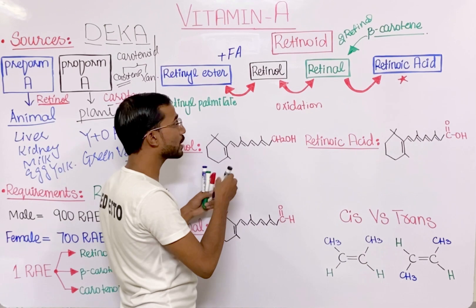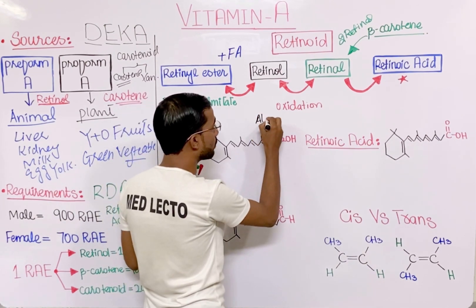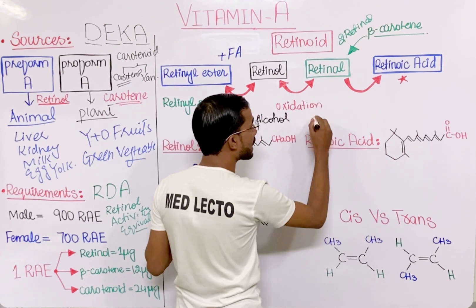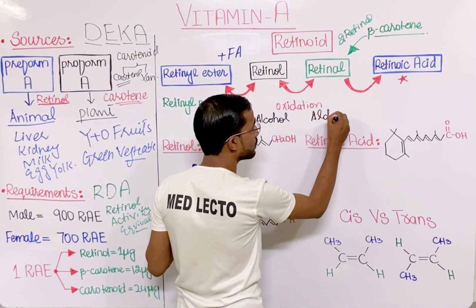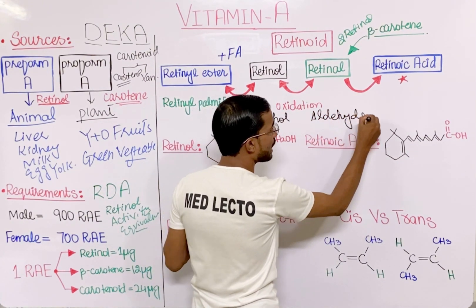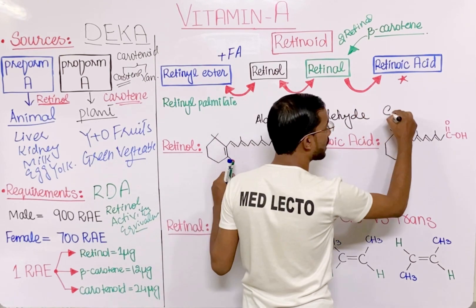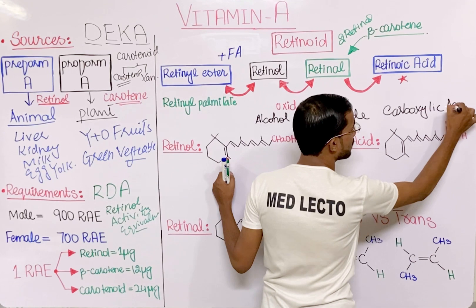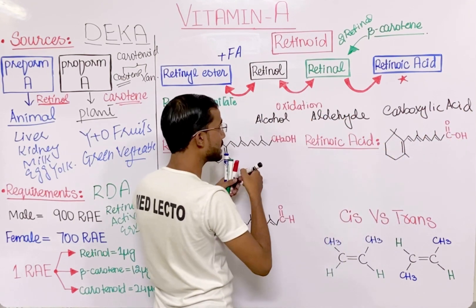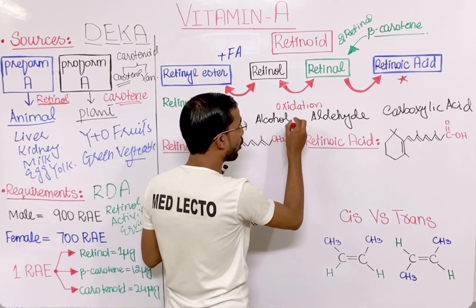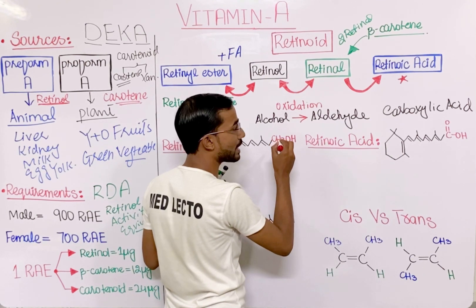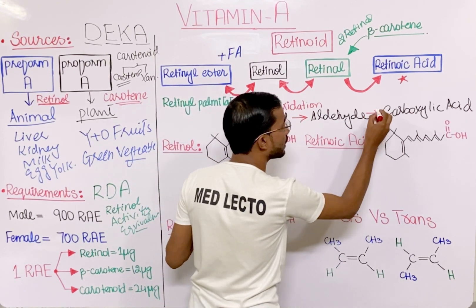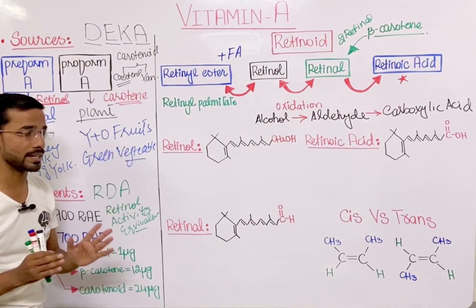Retinol is the alcoholic form, retinal is the aldehyde form, and retinoic acid is the carboxylic acid form. Alcohol is converted into aldehyde by oxidation, and aldehyde converts into carboxylic acid by further oxidation.